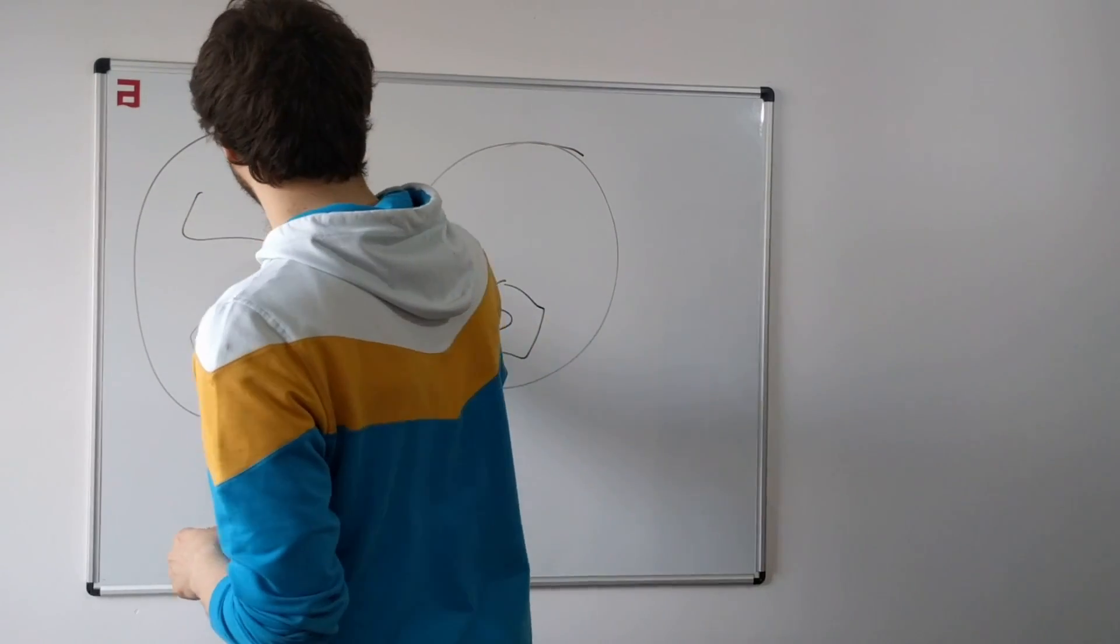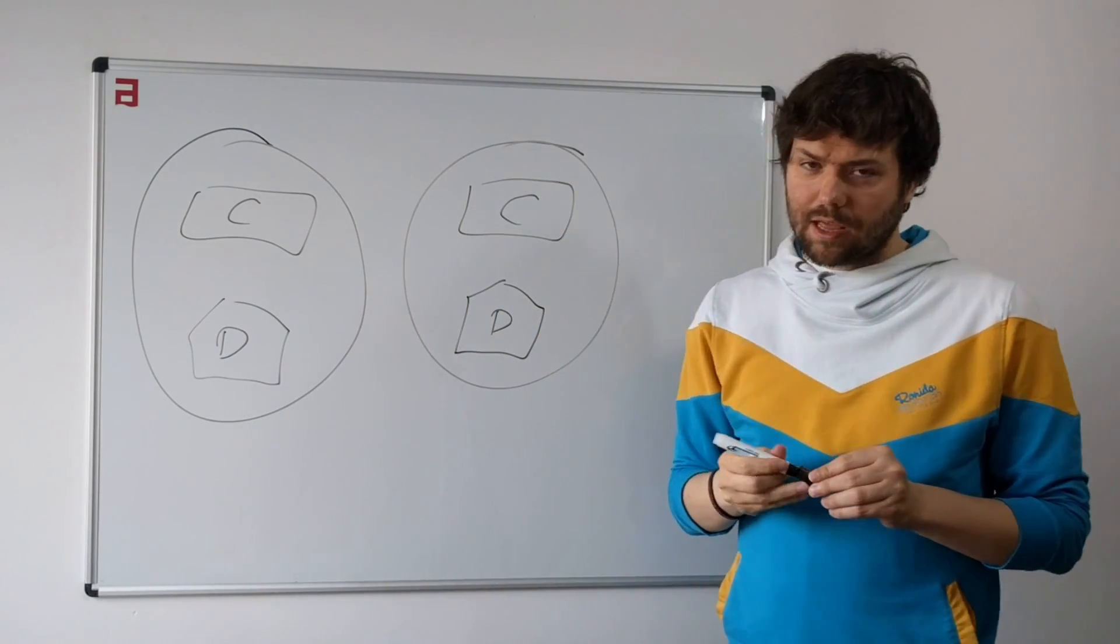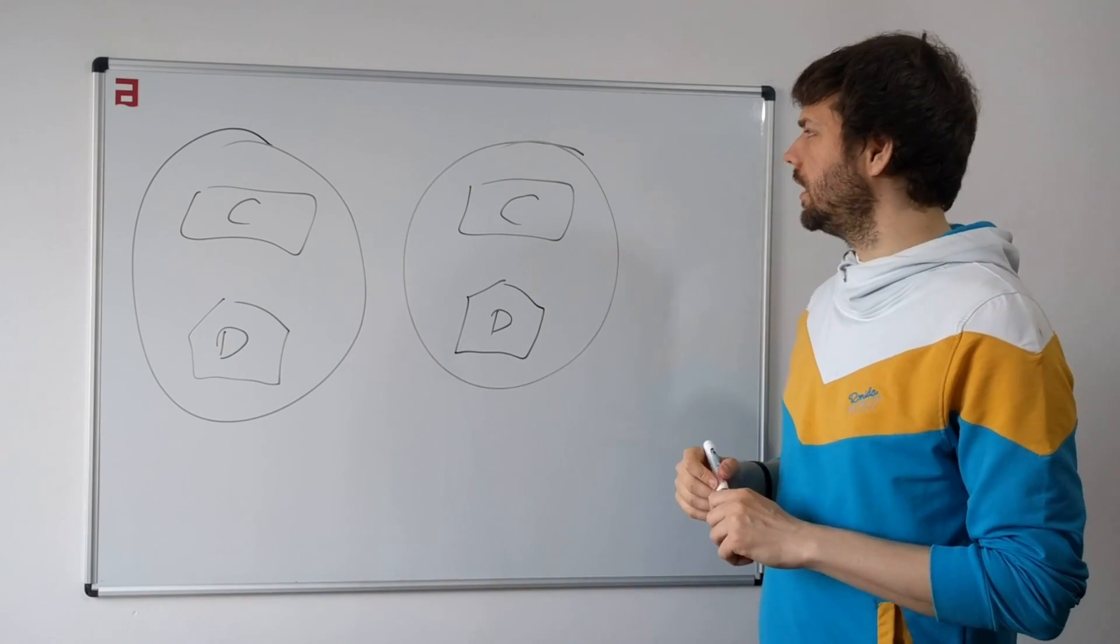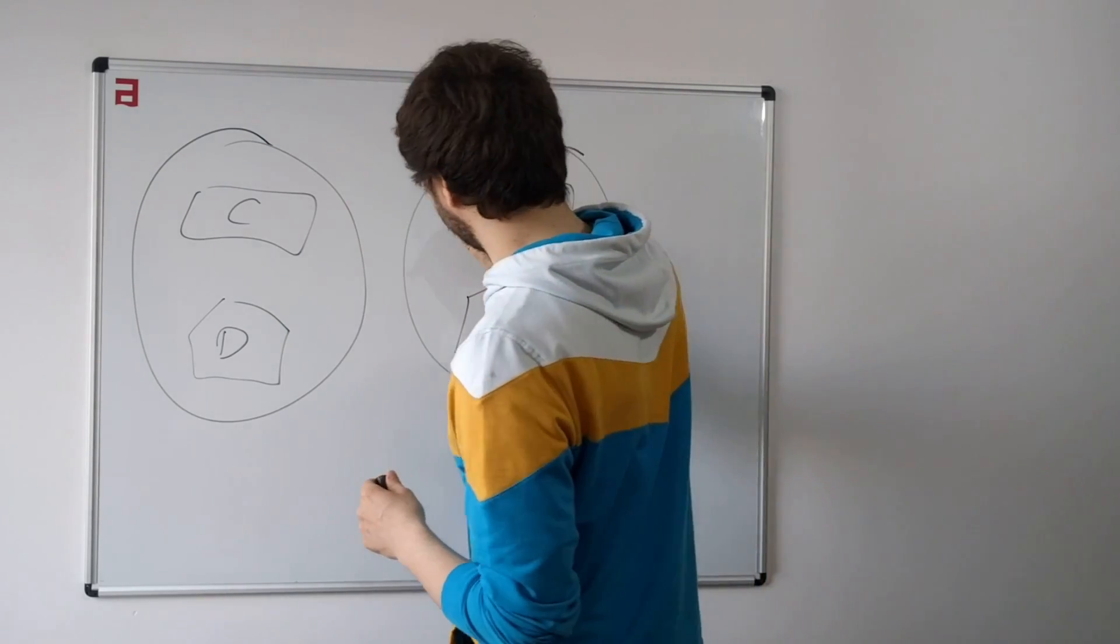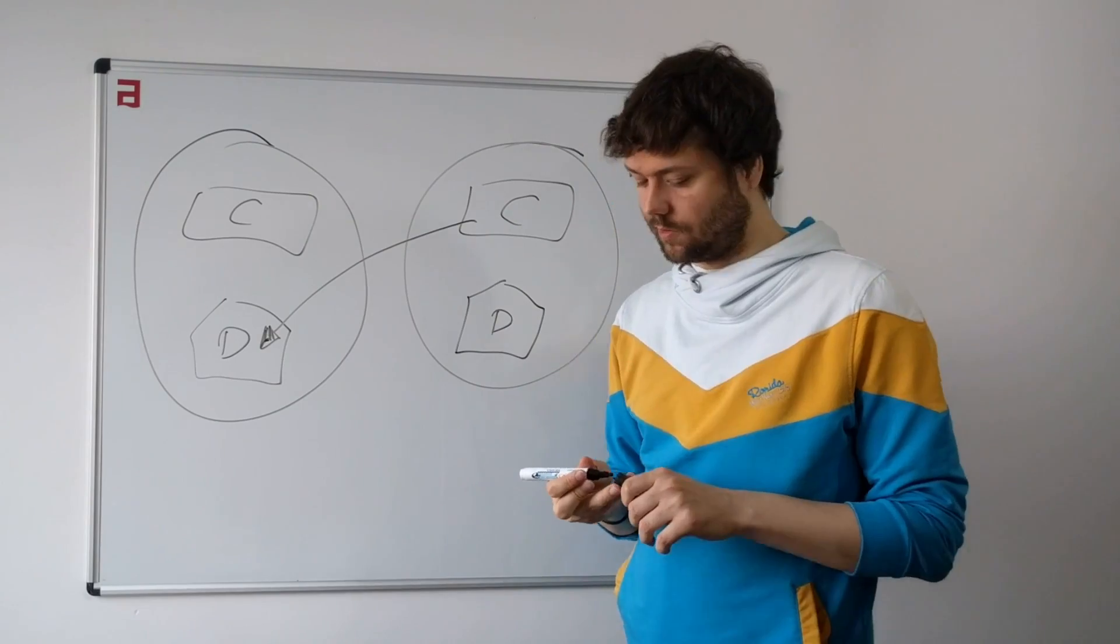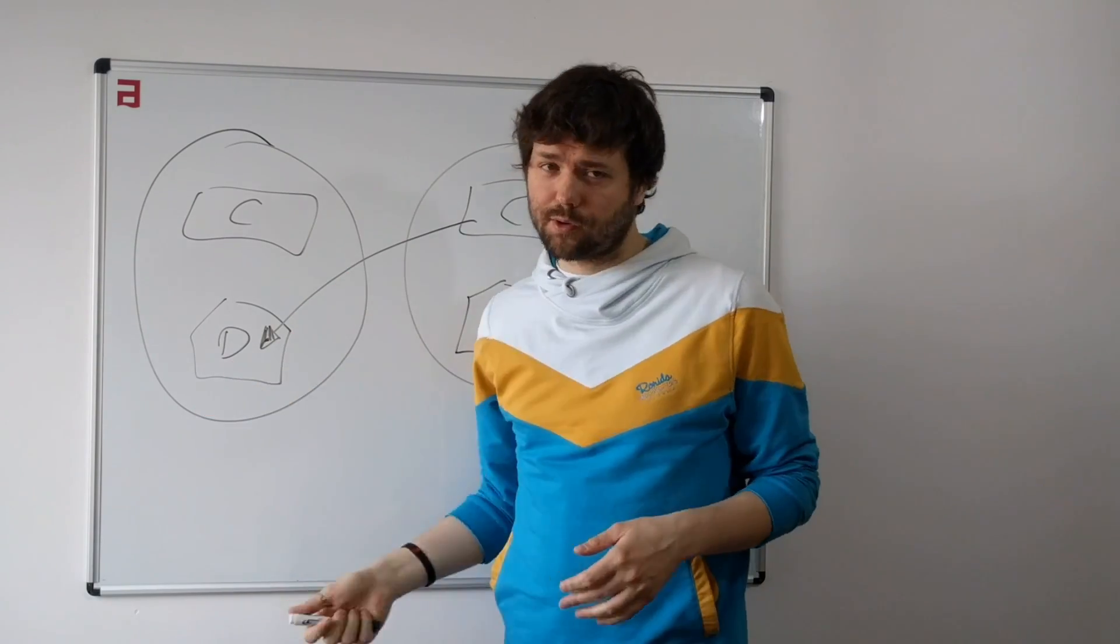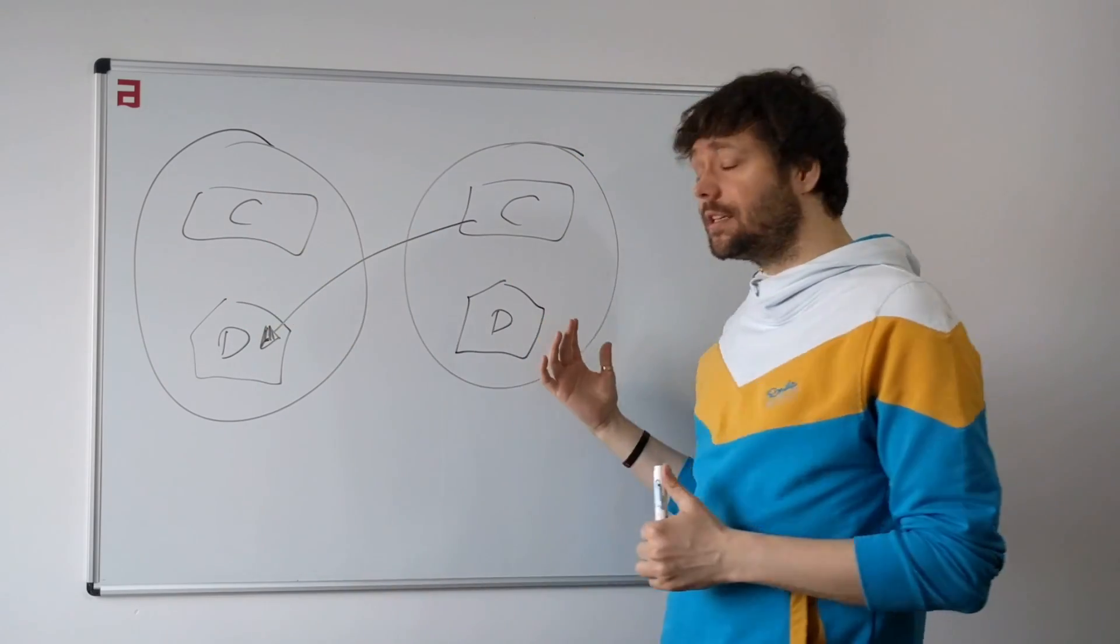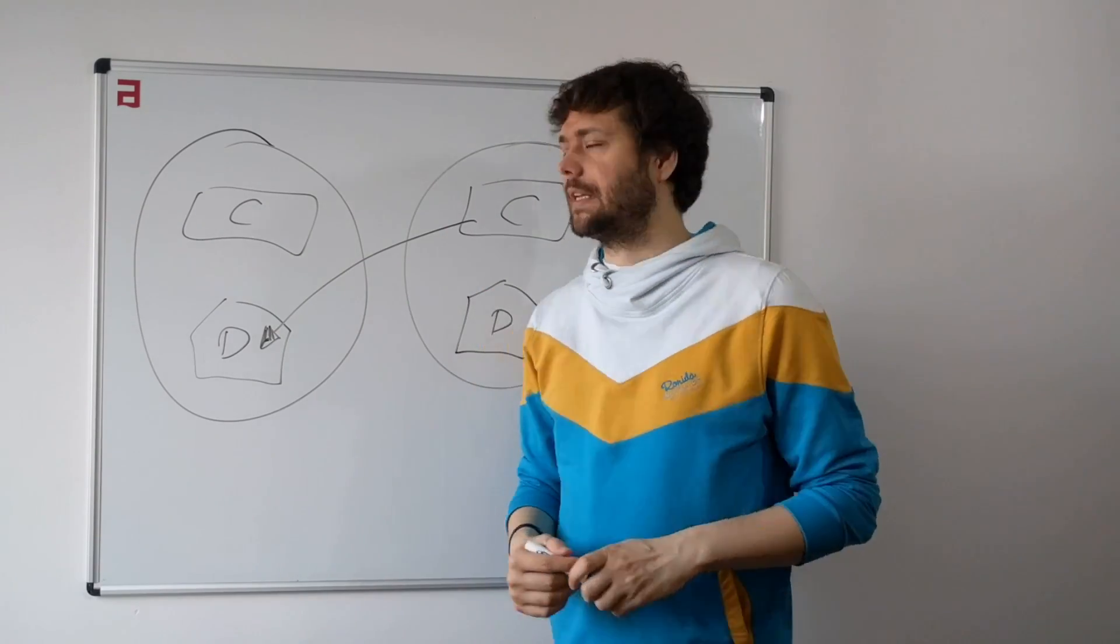I told you that the very big problem that I see is that the other bounded context, its code, is looking directly into the data of the first bounded context. So you have, for example, payments looking directly into order to see how much money should be paid, or orders looking directly into payments to figure out whether the order was paid and whether the products can be delivered.